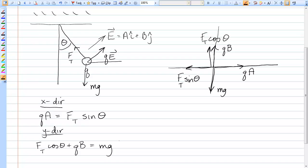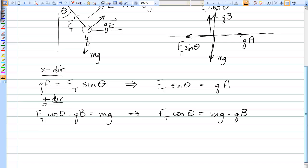So the first thing I'm going to do is try to eliminate Ft. So I'm going to rewrite this X equation as Ft sine theta and the Y direction as Ft cosine theta equals mg minus QB. Now I'm going to divide the X equation by the Y equation so that Ft cancels out. So when I divide, I get that sine theta over cosine theta is equal to QA divided by mg minus QB.